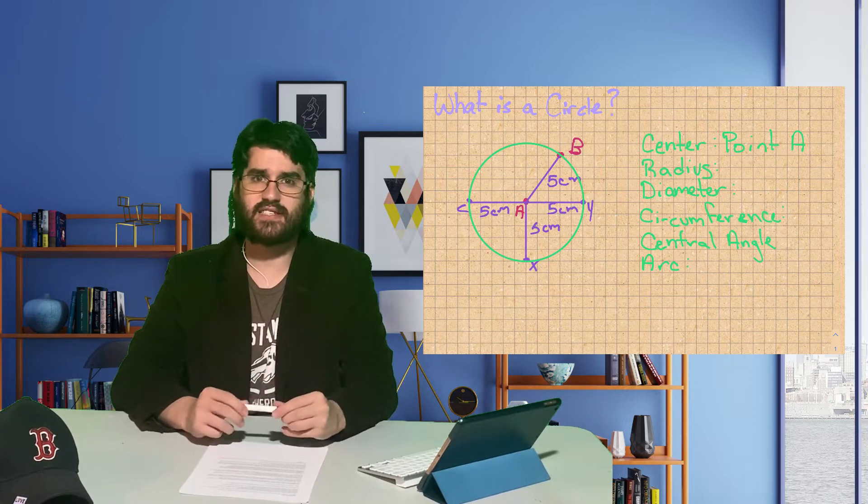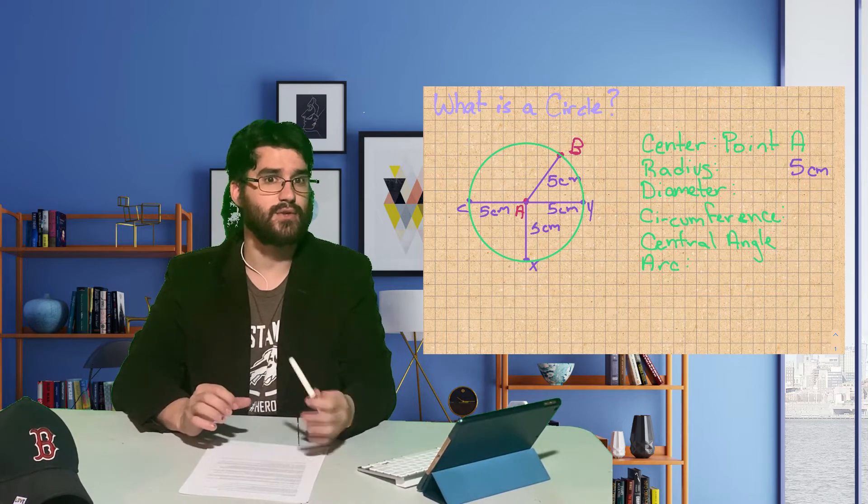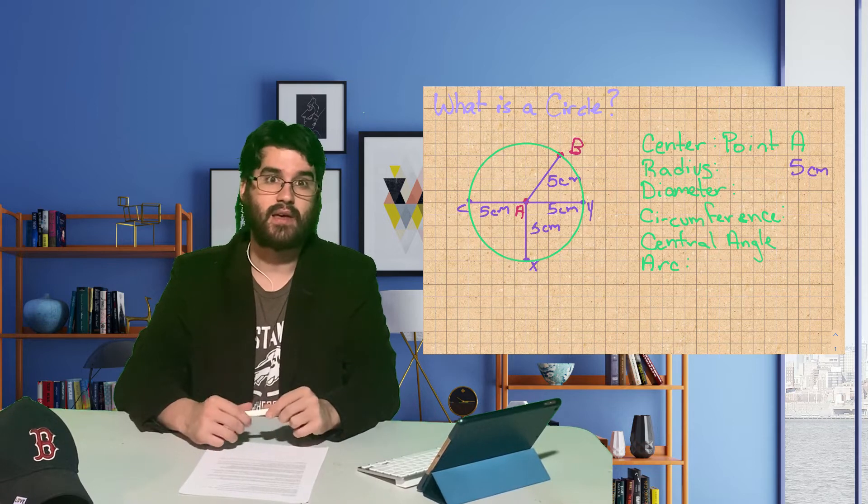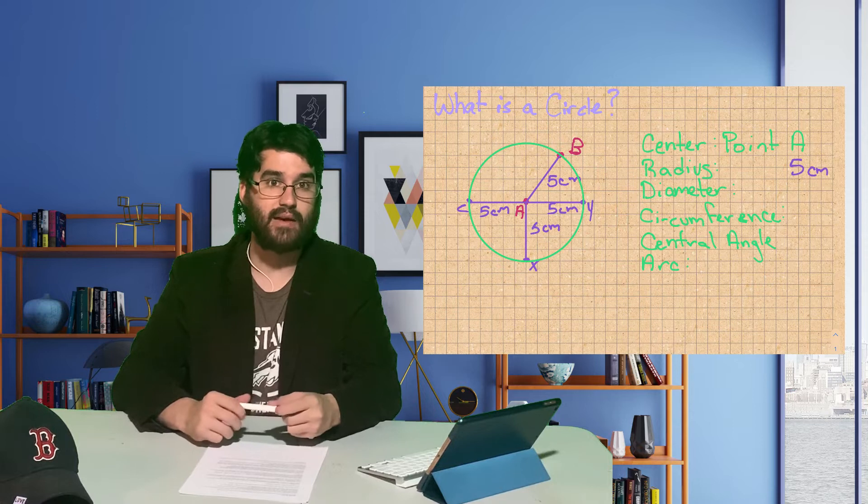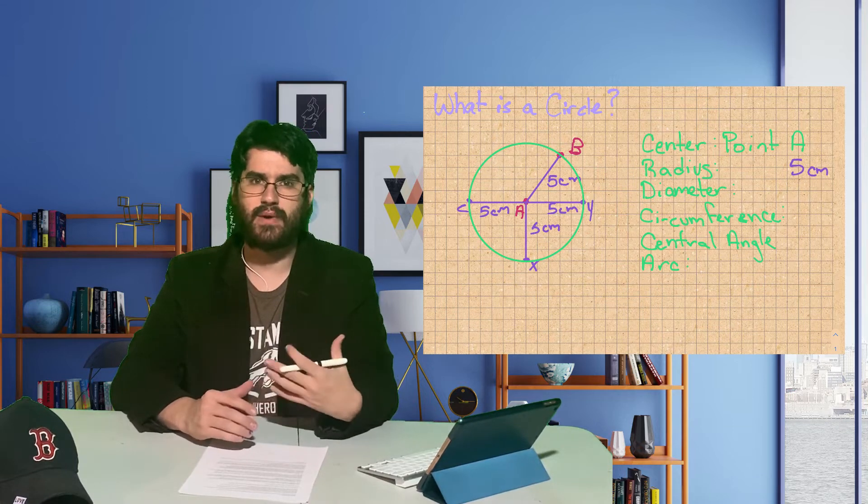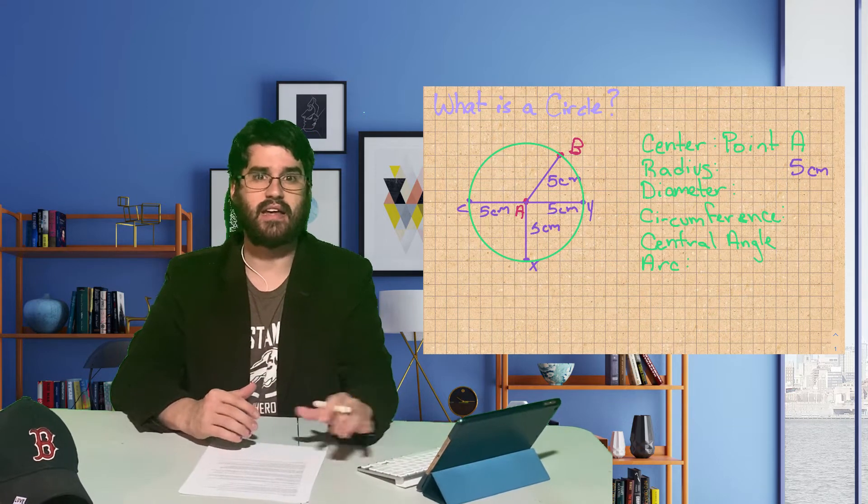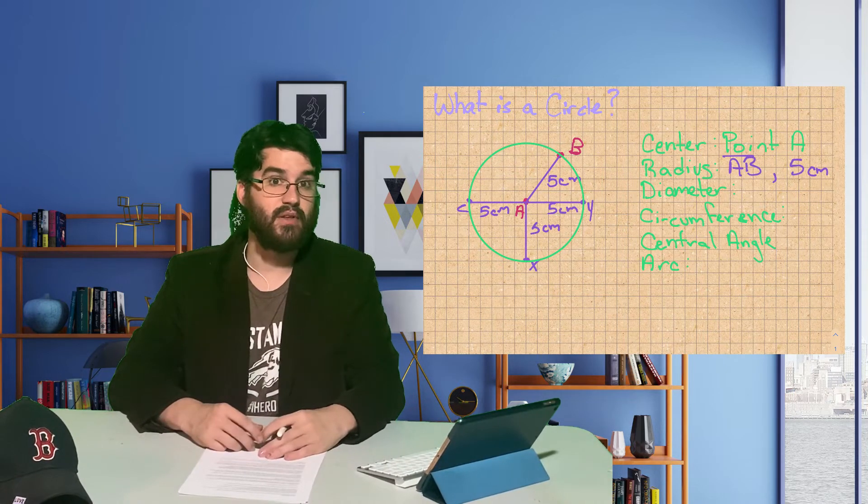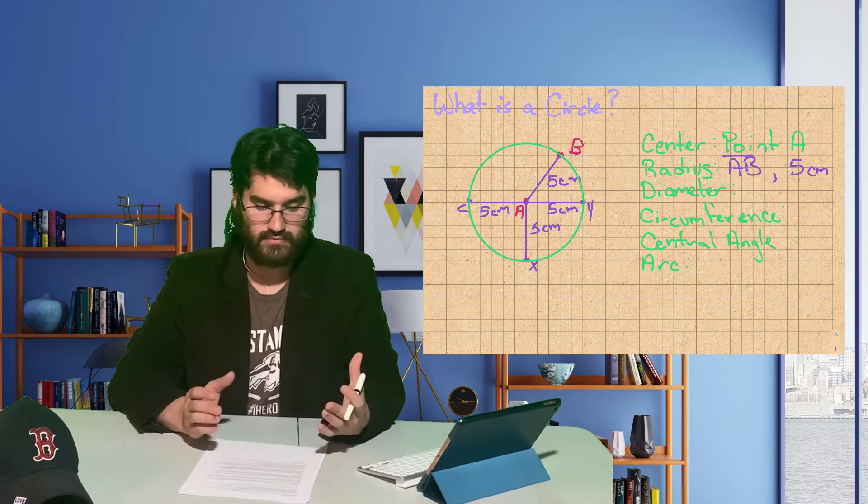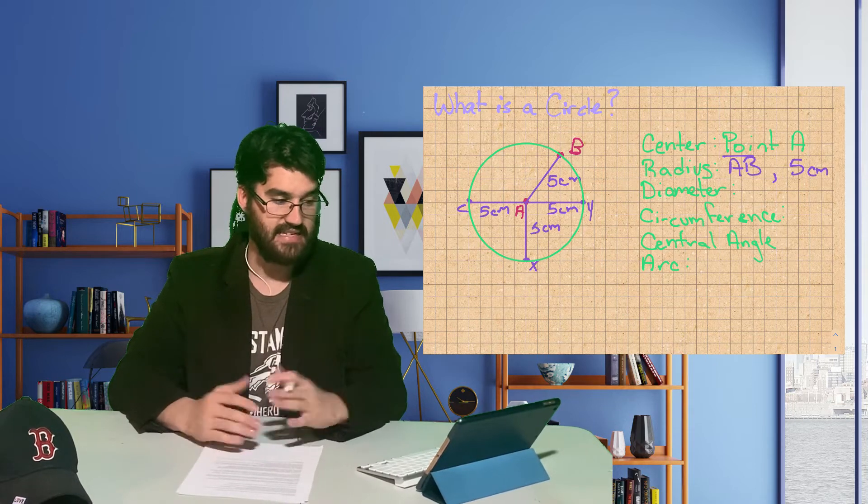That fixed distance is called the radius. The radius of this circle is 5 centimeters. Every point on this circle is 5 centimeters away from point A. We can also name the radius as we would any other segment. AB is a radius. There are three other radii that are drawn, for example, AC.